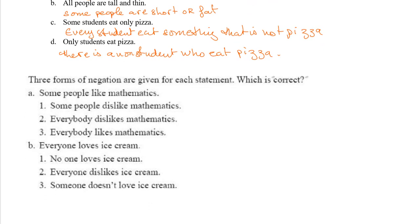Multiple choice: 'Some people like mathematics' — the negation should be 'everybody dislikes mathematics,' so the answer is two. 'Everyone loves ice cream' — negating ∀ gives ∃, so it becomes 'someone doesn't love ice cream,' answer is three. That's how we negate statements — I hope this video is helpful.